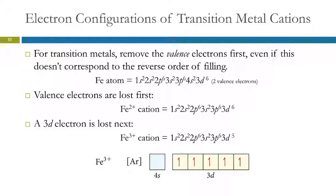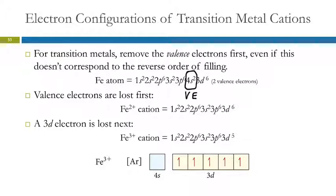Transition metals are a little more difficult. Here we're removing the valence electrons, and this does not always correspond to the reverse filling order. For the iron atom, the 4s orbital fills before the 3d orbital, but when iron becomes an ion, the electrons that are lost first are the valence electrons — those in the 4s.